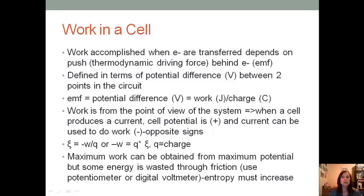Work is from the point of view of the system. If the system has to do work, that's negative, and if work is done on it, that's positive. When a cell produces a current, we want the cell potential to be positive, but that current can be used to do work, which means work is going to leave the cell, which makes it negative. This means that cell potential and work are opposite in sign. Another way to find cell potential is to take the negative work divided by Q, which represents the charge. If we rearrange this, we get that negative work equals charge times the cell potential.